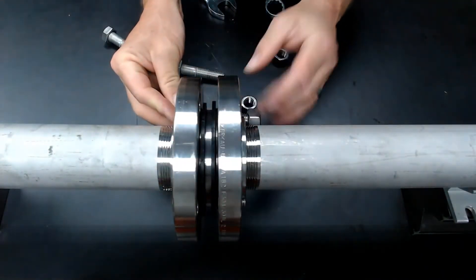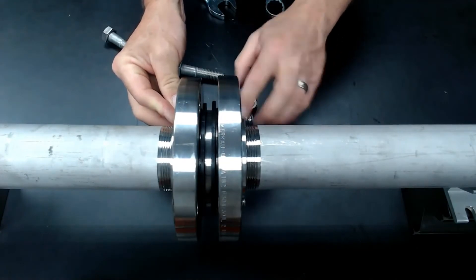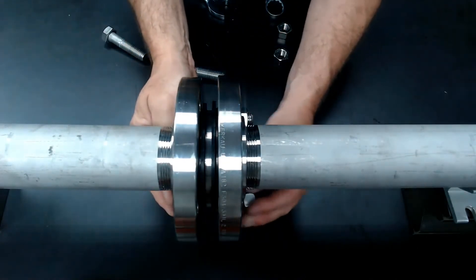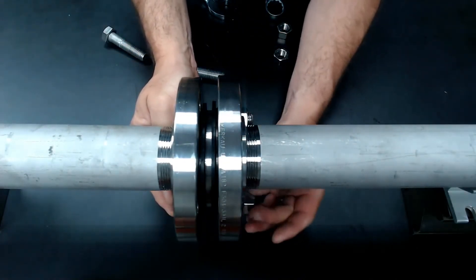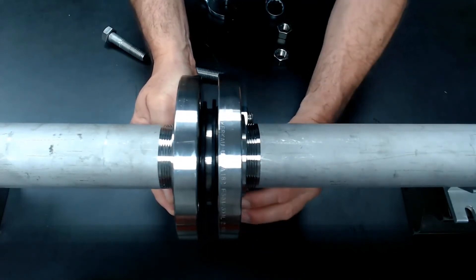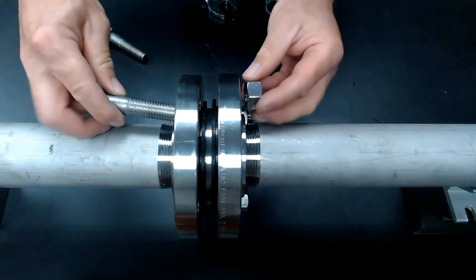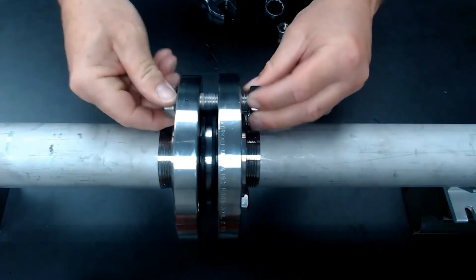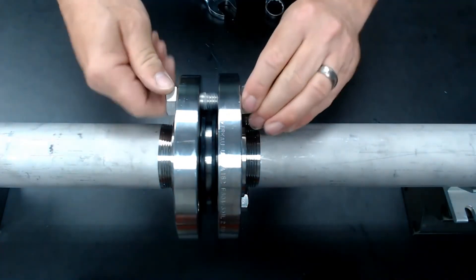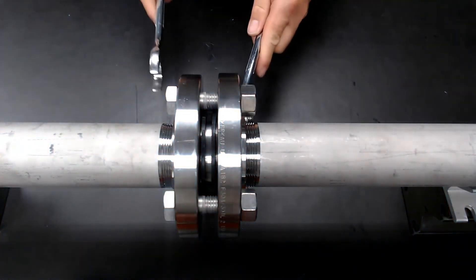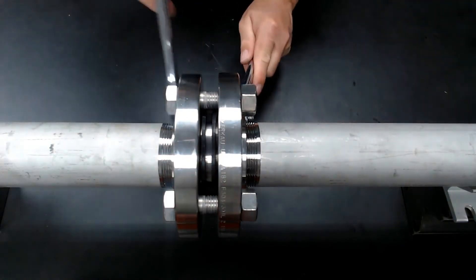Install a few hex nuts to get the process started and put your other fasteners in place. Then tighten your fasteners to the required torque specifications for your application.